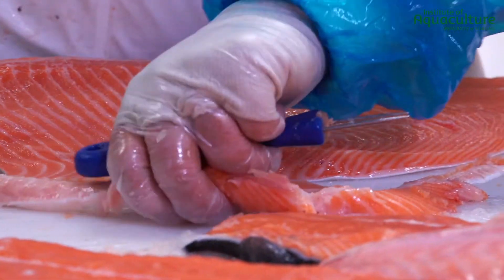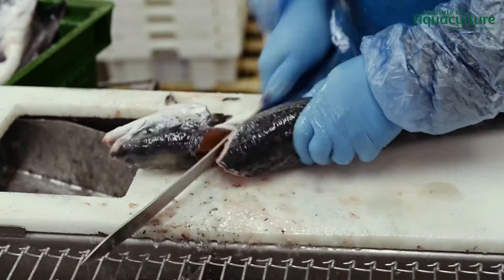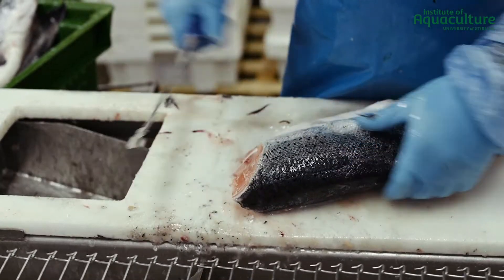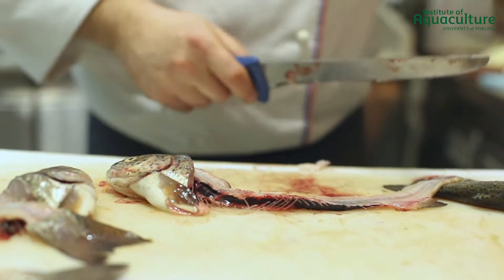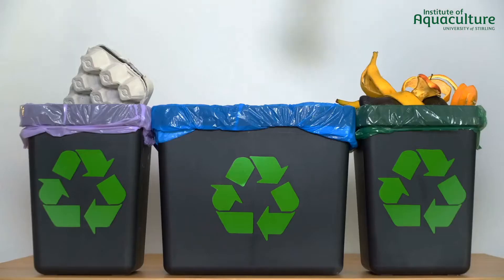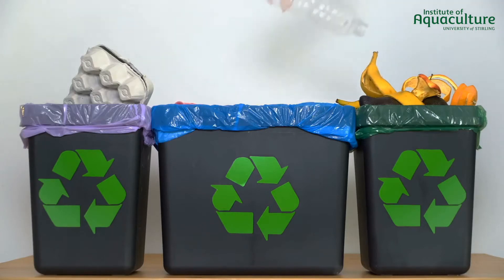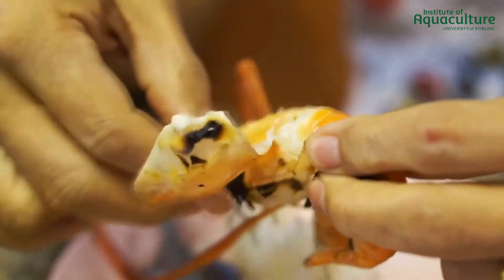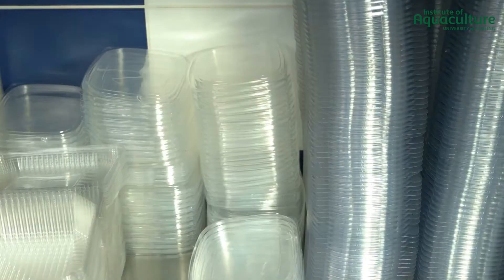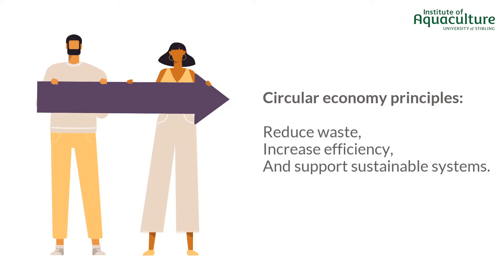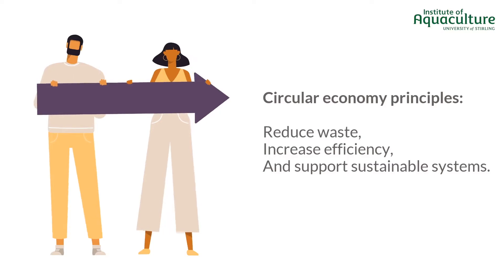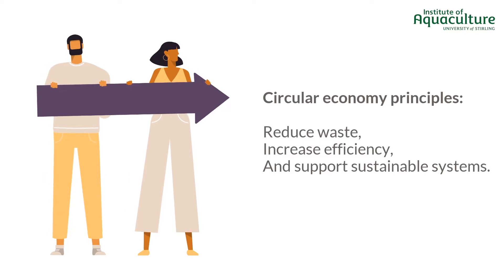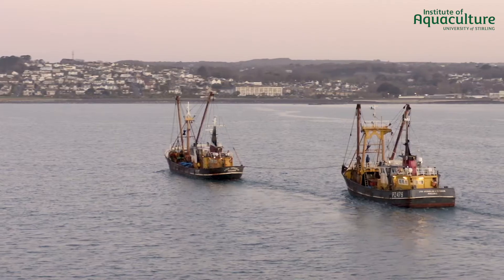The circular economy also encourages valorizing byproducts that might otherwise be disposed of, and reusing or recycling other items at the end of their useful life. For example, crustacean shells can be processed into biodegradable packaging. Circular economy principles reduce waste, increase efficiency, and support more sustainable systems.